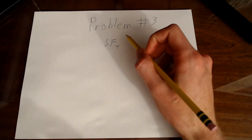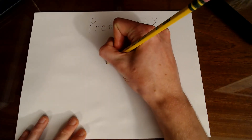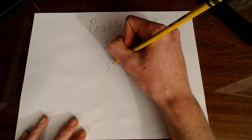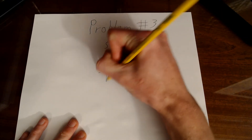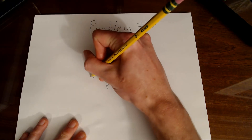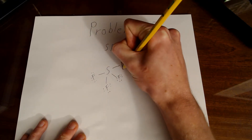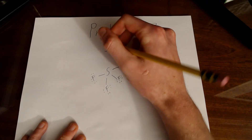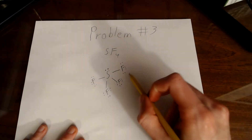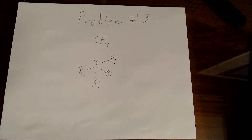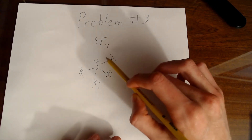For our third molecule, we have the SF4 molecule, which has a Lewis structure that looks like this. The sulfur atom is the central atom, and it is surrounded by 1, 2, 3, 4 fluorine atoms. After drawing the electrons surrounding each of these fluorine atoms, the sulfur atom also has 1 lone pair of electrons surrounding it, and this is the Lewis structure for SF4. Now, we'll use our VSEPR theory structure table to determine the VSEPR structure for the SF4 molecule based on its Lewis structure.